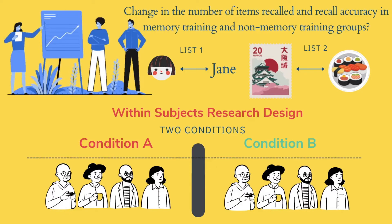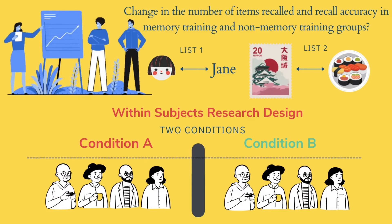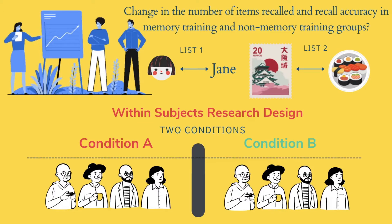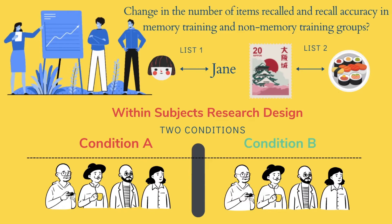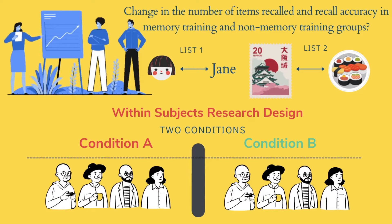If we made this study a within-subjects design, in the within-subjects version, we would first subject the participants to a non-memory training condition. Following this, we would account for their memory recall and accuracy performance through cognitive tests. After some time gap — say a few days or weeks — we would then subject the same participants to the memory training group and account for their performance in memory recall and accuracy. We then account for any differences in their performance based on which training they were subjected to. This is therefore the within-subjects research design for the same research question.